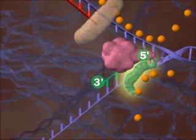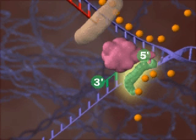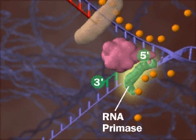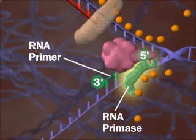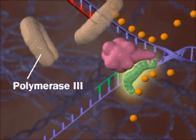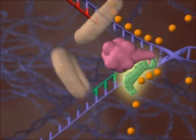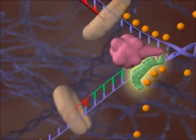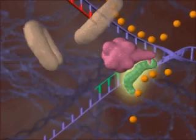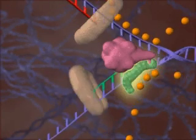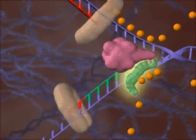First, an RNA primase lays down an RNA primer. Then, DNA polymerase 3 lays down new DNA. The process repeats again and again.